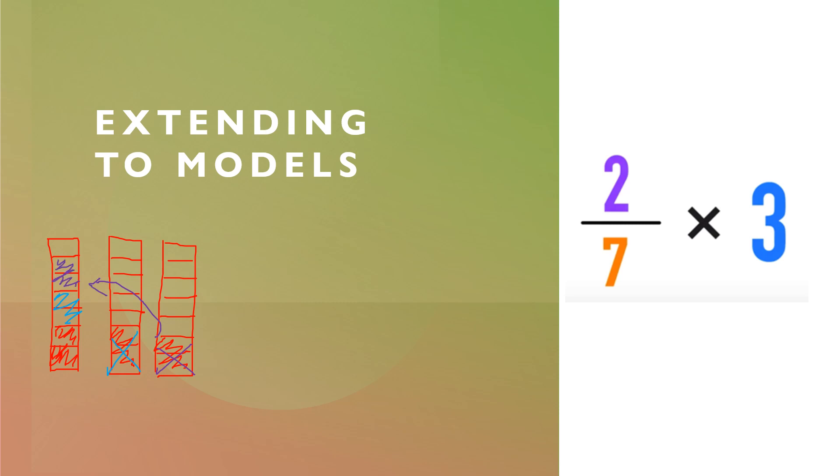As you can see, when I multiply them—which means repeated addition—I also get 6 out of 7 pieces that are shaded in. And that's how we can show it in models. Take care of yourselves. Thank you.